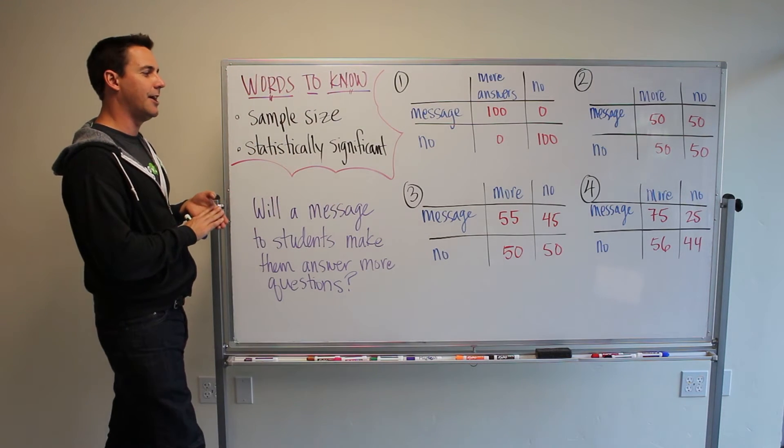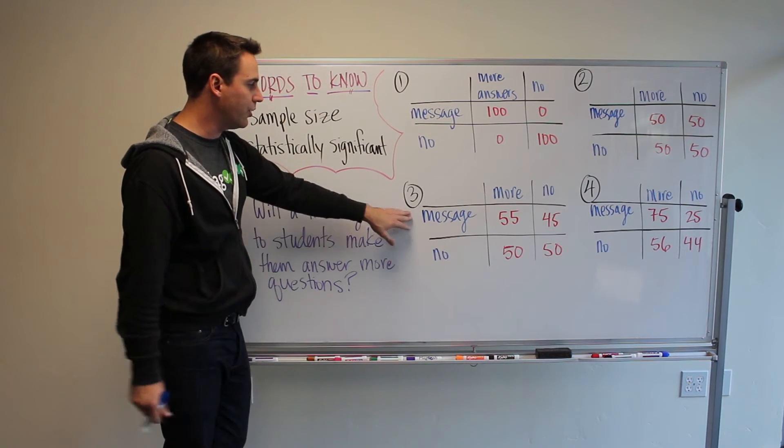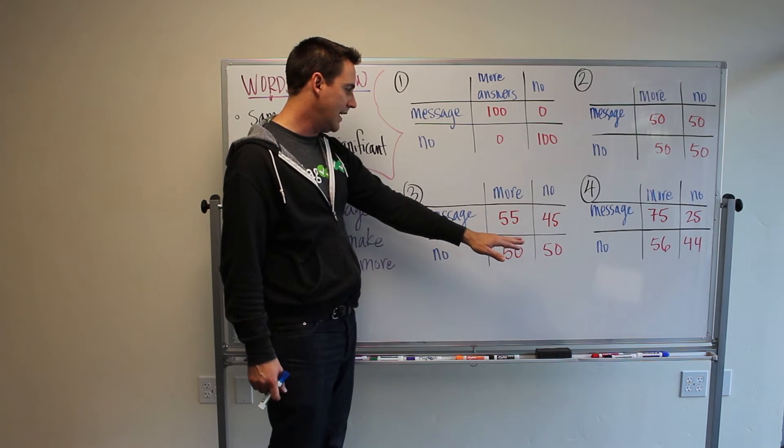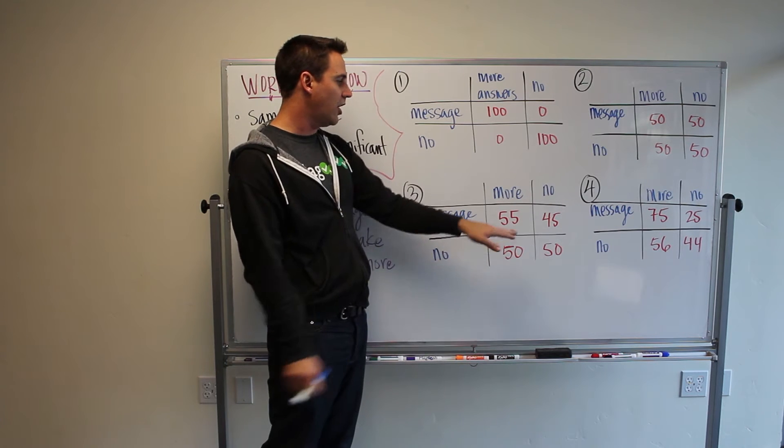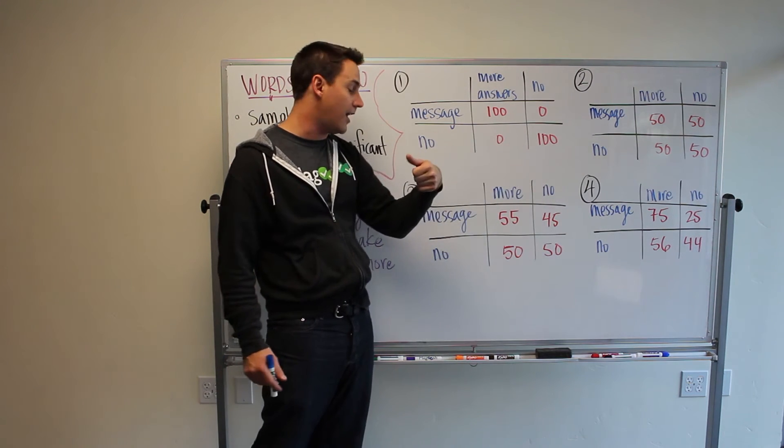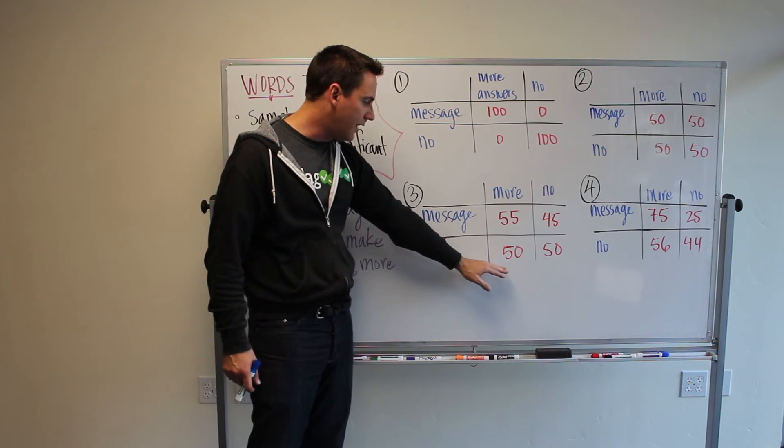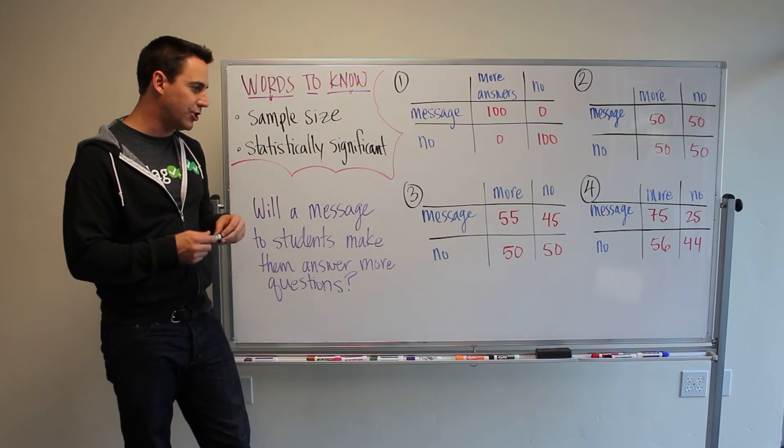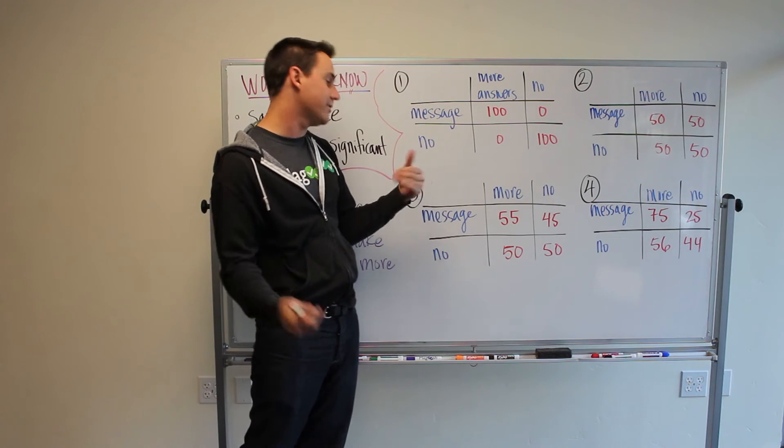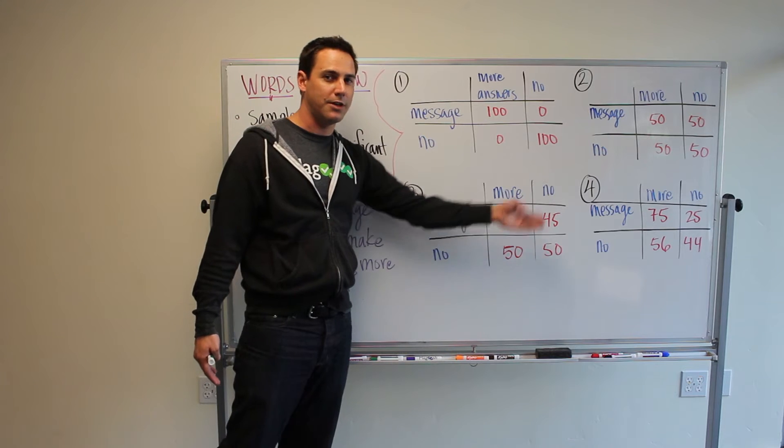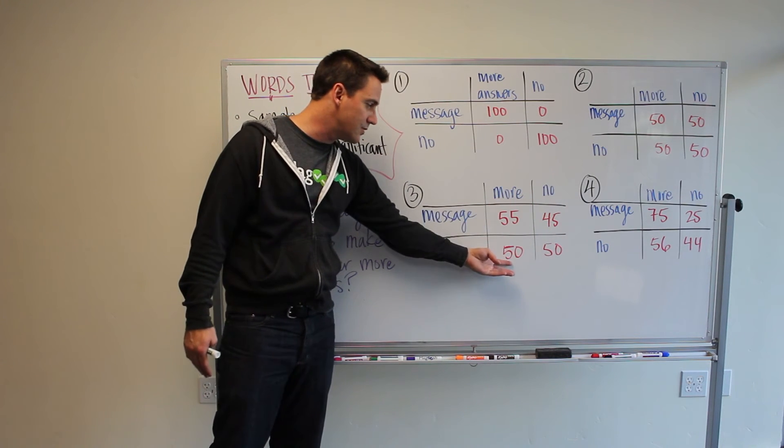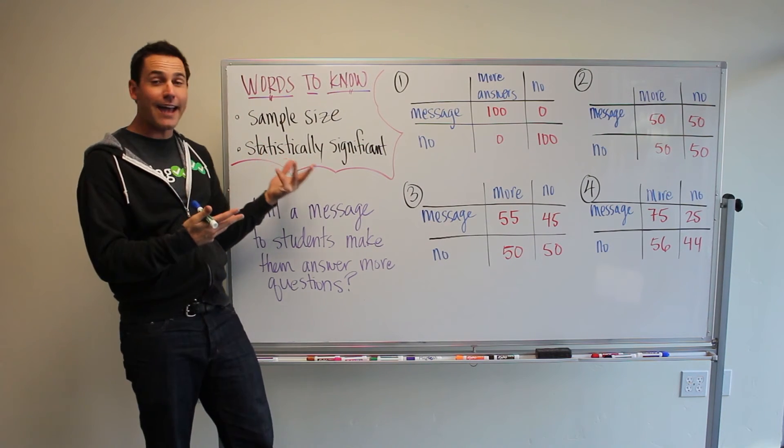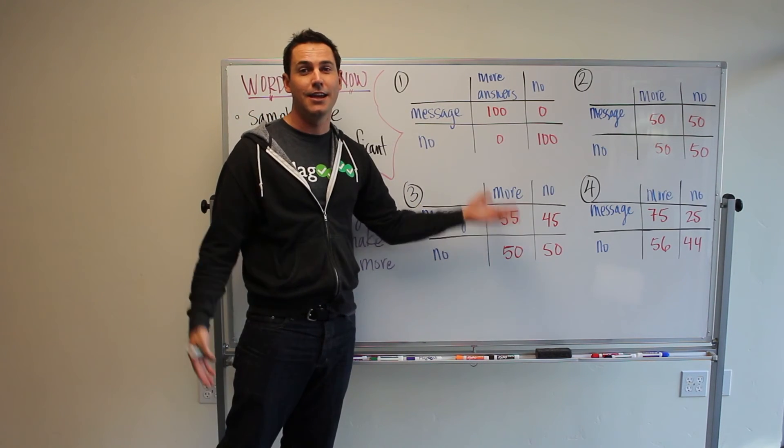Now, let's look at some scenarios that get closer to how things are in the real world. So in the third scenario, we have, again, 100 people got the message, 100 people did not. And then we see of the people who got the message, 55 answered more questions, 45 did not. But then the people who did not get the message, 50 people answered more questions and 50 people did not. So now we're starting to get closer to something that's a little ambiguous, because we do see that people who got the message did answer more questions than the people who did not. And here as well. But the difference is so small. It's very little. It's not that statistically significant. Because this could just be by chance.